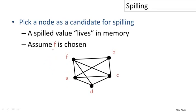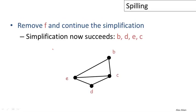We'll remove F from the graph just like before, and then we'll continue with our simplification. This will now succeed because once we remove F from the graph, several of the nodes have fewer than three neighbors. B and D both only have two neighbors.